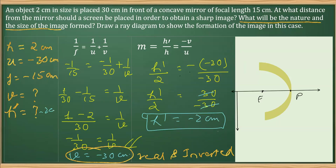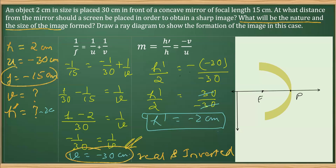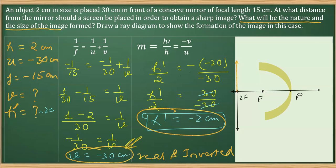So h' equals minus 2 centimeters, where the minus sign indicates the image is inverted. We can also verify: since f is minus 15 centimeters and the object is placed at twice the focal length (i.e., at 2f or centre of curvature C), the object and image are equal in size — both 2 centimeters — which matches our result.